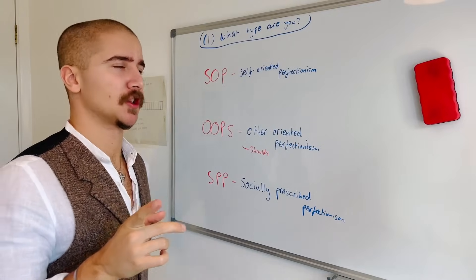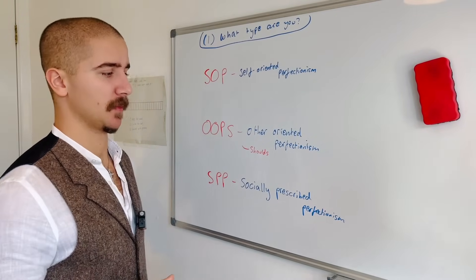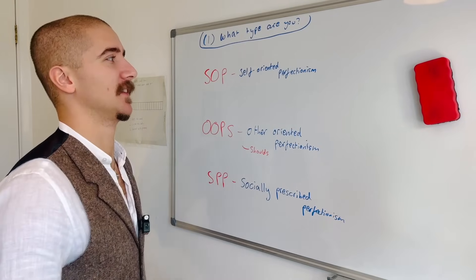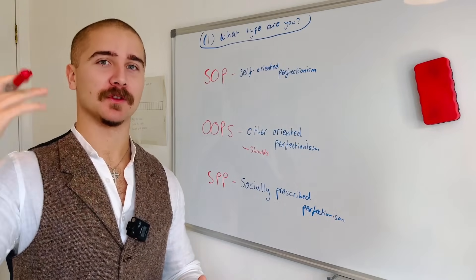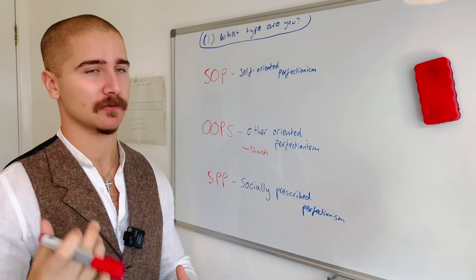First up, what type of perfectionist are you? We've got three types: SOP, OOP, and SPP. SOPs are self-oriented perfectionists. This is where you set your own high standards which are impossible to meet and you're very self-critical.